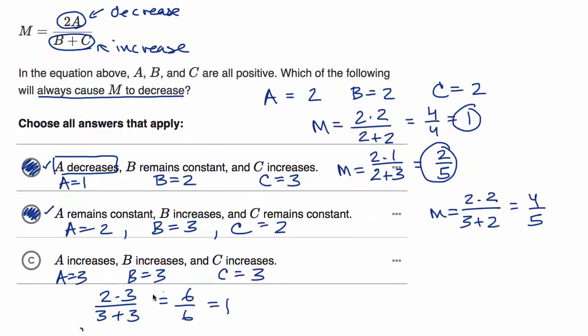So if you happen to pick these choices where M is unchanged, then you know that this situation will not always cause M to decrease. So we could rule that out. Now, if you're just picking values, there are some set of values, some original values, or depending on how much you want to increase A, B, and C, where you could make M decrease. For example, if you increased B by a lot, if you made B 30 and C 30, this will cause M to decrease. And you can also do things in choice C that would make M increase.